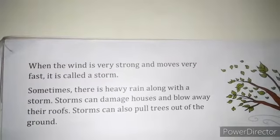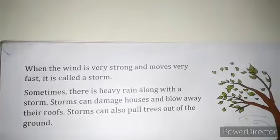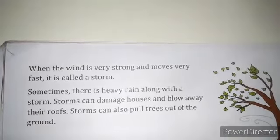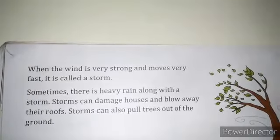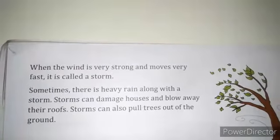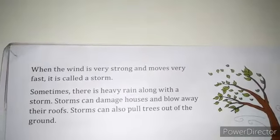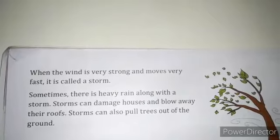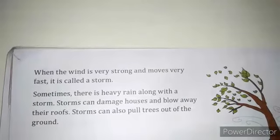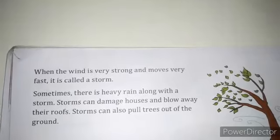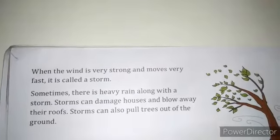You can see the trees — their leaves are falling down because the wind pressure is very high, and that is why it is called a storm. Sometimes there is heavy rain along with a storm. A storm can damage houses and blow away their roofs, and it can also pull trees out of the ground. When the wind comes very strong, like in a cyclone, it destroys things over a large area, harms us very much, and affects our economy.